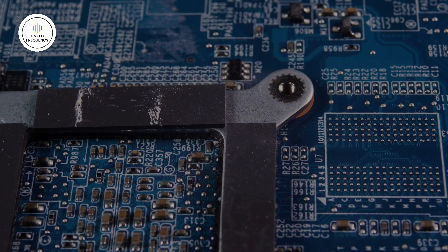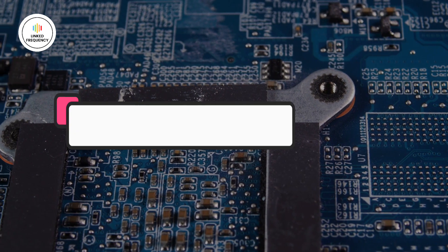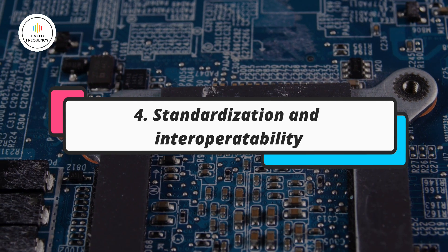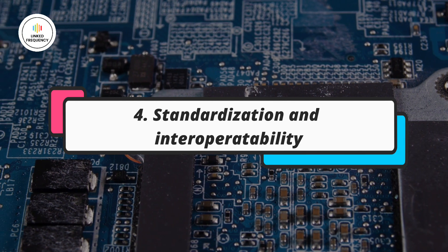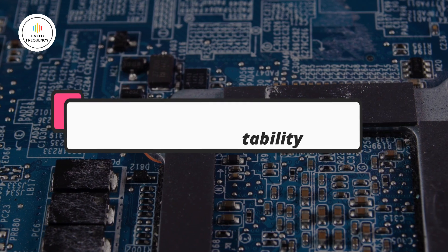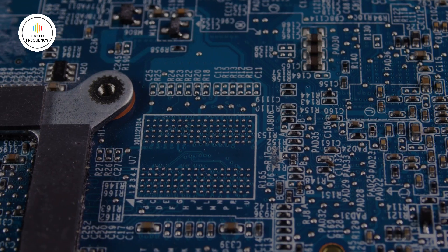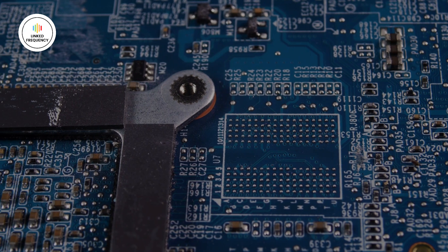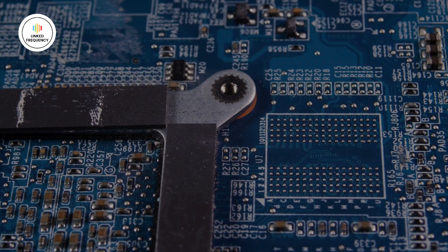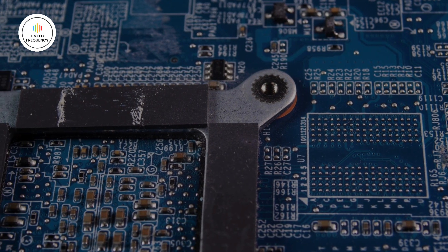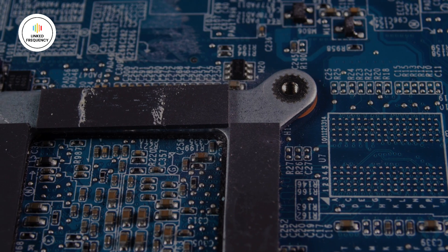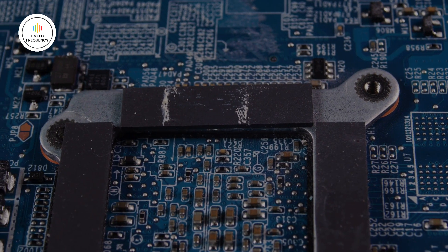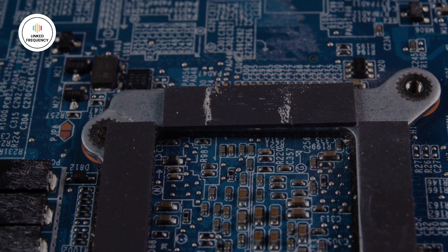Last but not the least, the final point is standardization. Prior to the introduction of CAN, different vehicle manufacturers used their own communication protocols, making it challenging to integrate components from different suppliers. CAN's development as an open standard promoted the automotive industry to adopt a unified communication protocol, facilitating the integration of components and collaboration among manufacturers and suppliers.